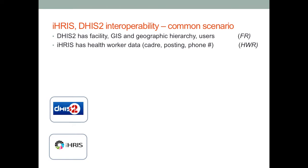What we see typically in a country is that there is more than one HRIS system. This can be by sector, whether it's the public sector Ministry of Health system or a large FBO that's delivering services. We also see multiple systems based on the business use — traditional HR management systems, as well as licensure and accreditation systems used by a nursing council or other professional councils of health workers.